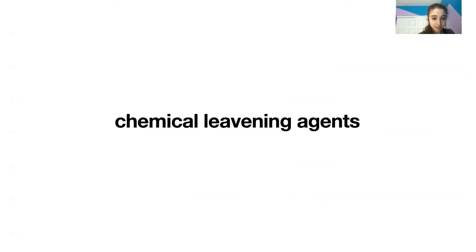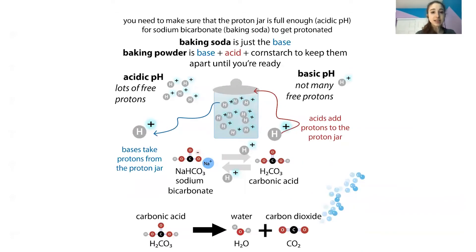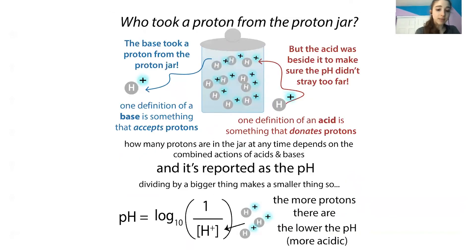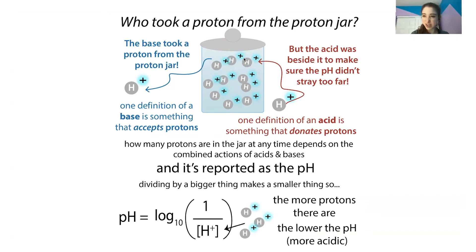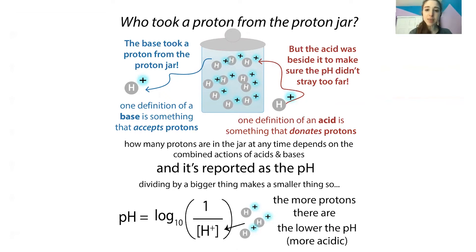Chemical leavening agents don't involve any living things — baking soda and baking powder are examples. These use acid-base interactions. An acid is something that donates a proton and a base is something that accepts a proton. Protons are H+ ions. The more protons you have, the more acidic a solution is and the lower the pH, because pH is an inverse log scale measuring proton concentration.